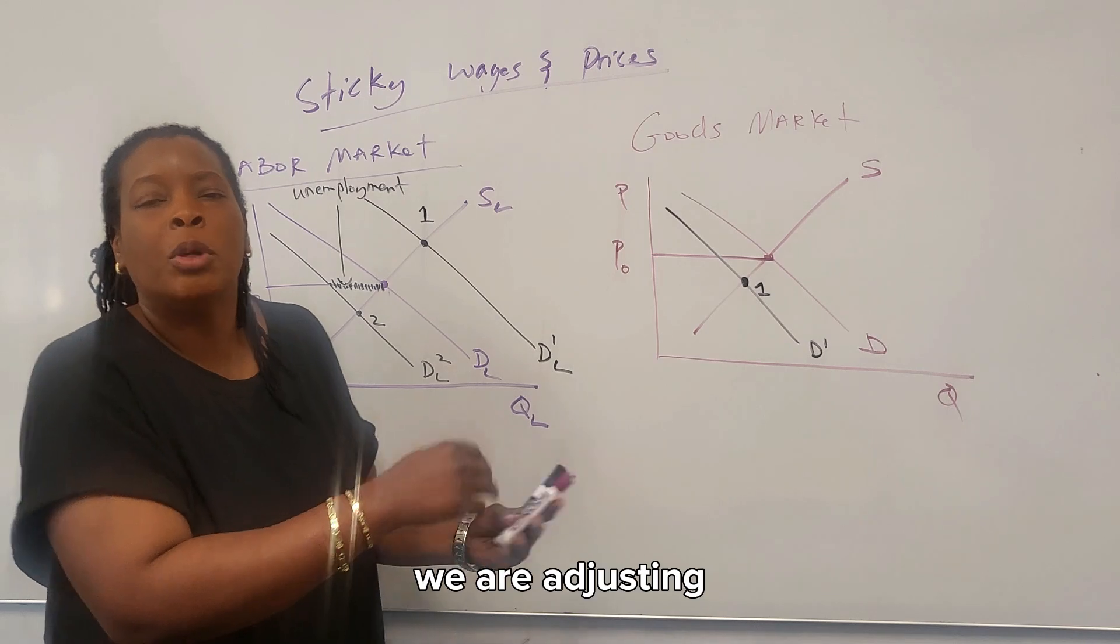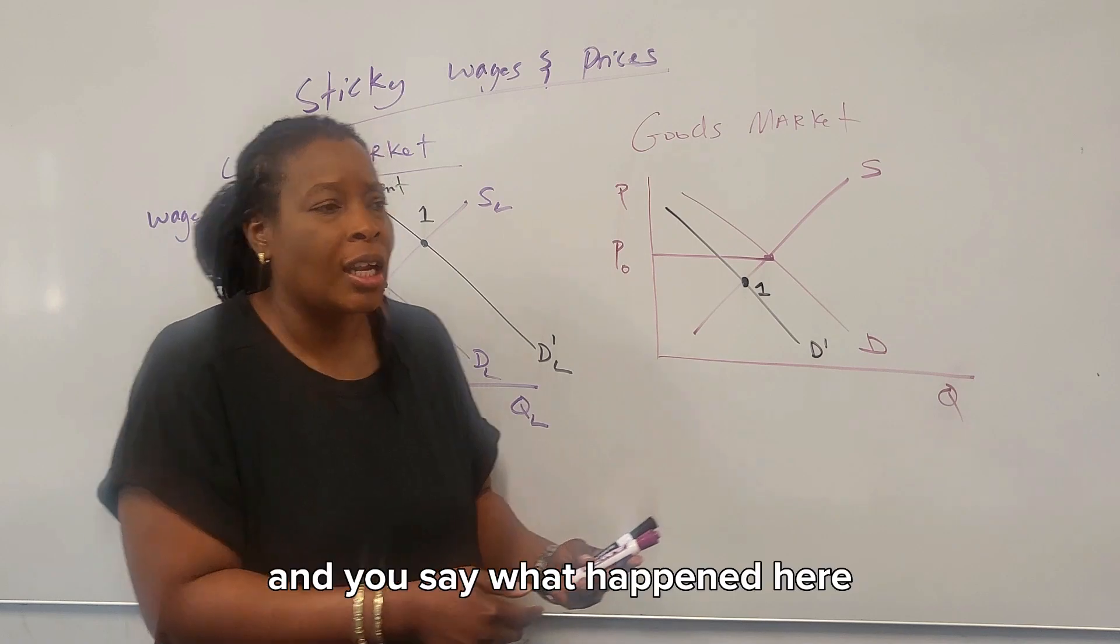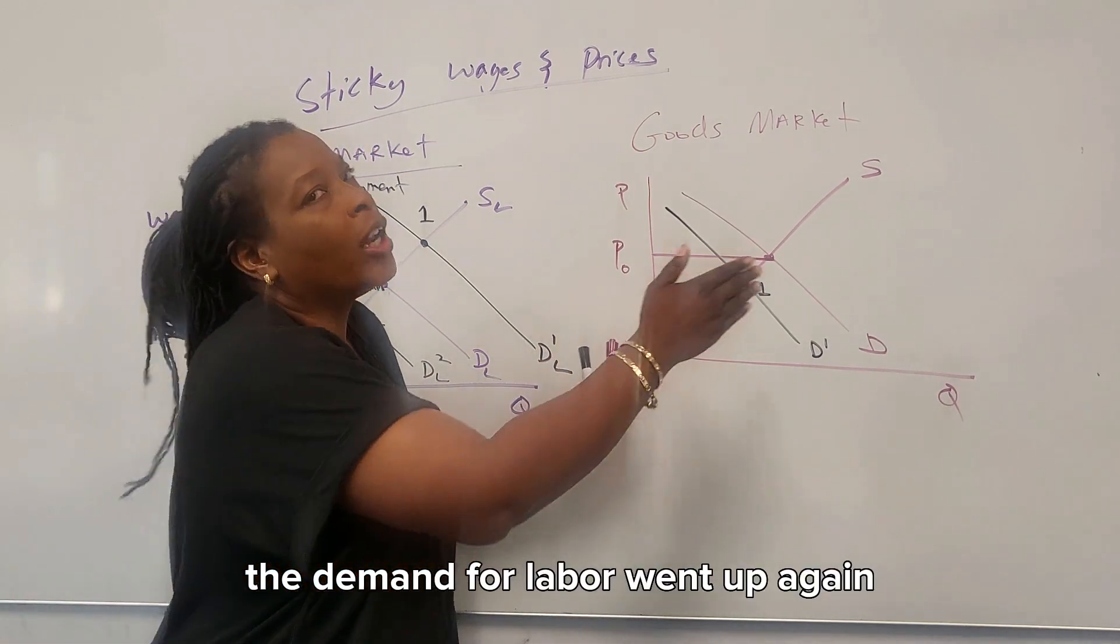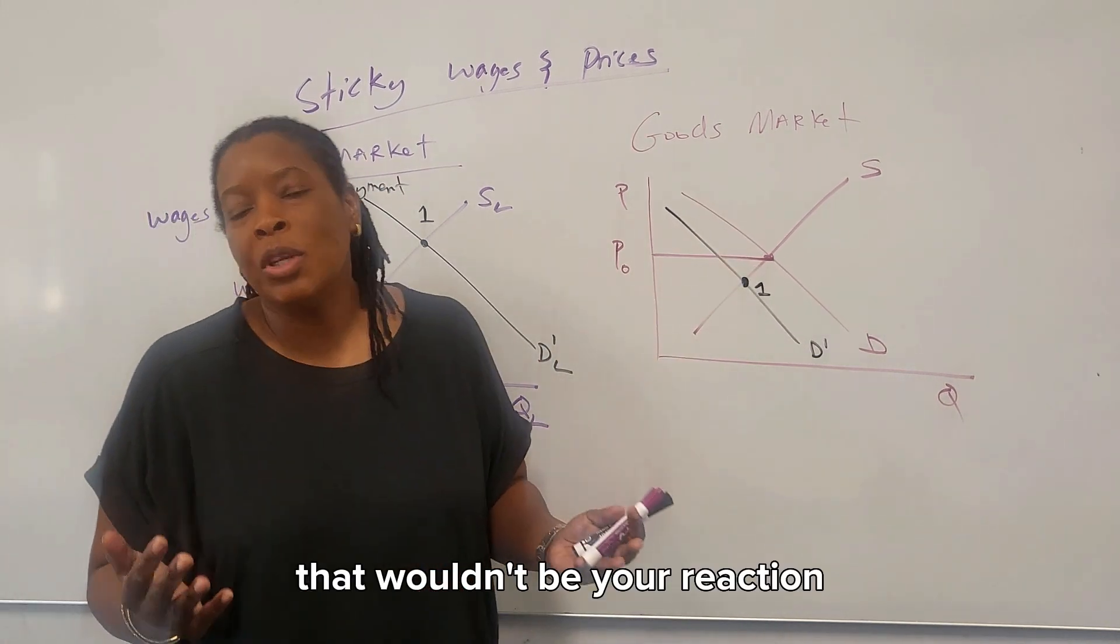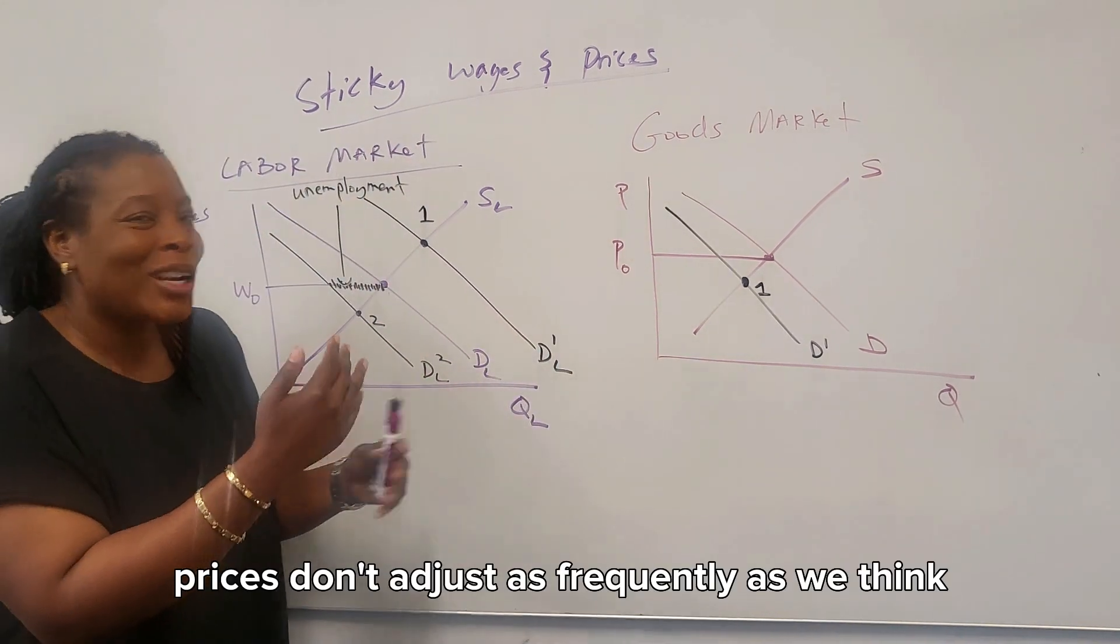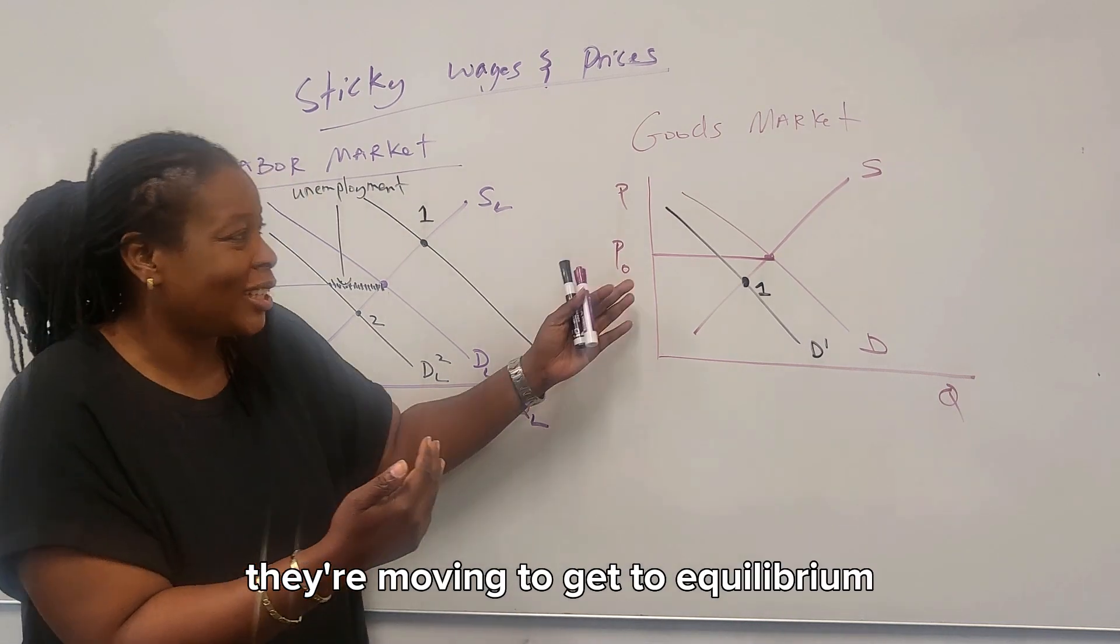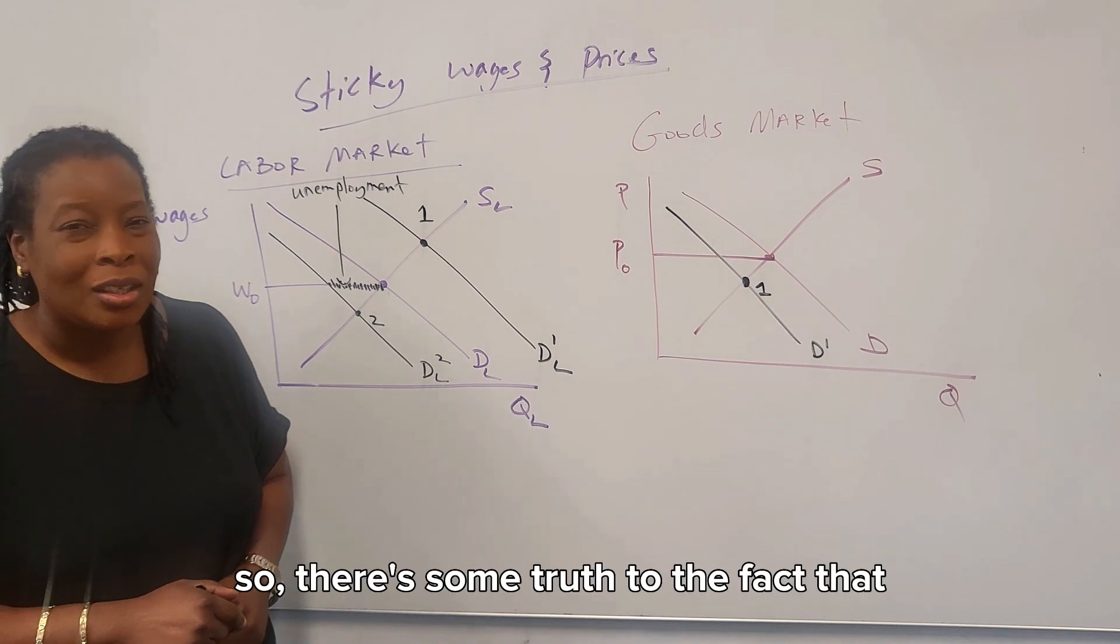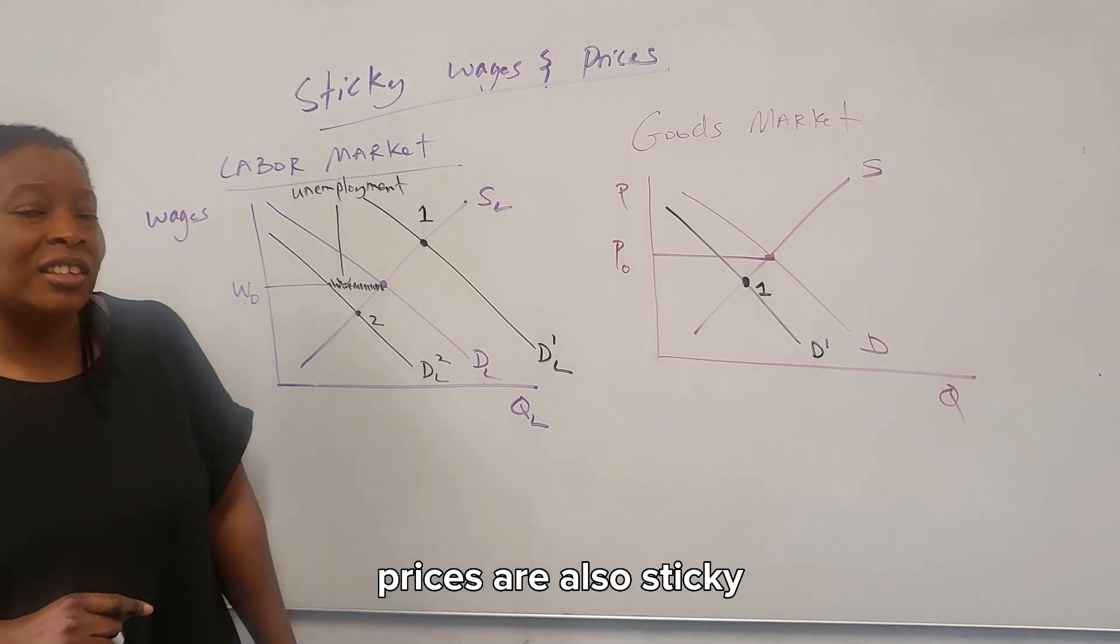And imagine you go the next day and it's now $20. And you say, what happened here? And they say, oh, the demand for labor went up again. So we changed it again. We're just moving with the economy. And you go, okay, that wouldn't be your reaction. So in the goods market, prices don't adjust as frequently as we think they're moving to get to equilibrium with these positive and negative shocks. So there's some truth to the fact that in the goods market, prices are also sticky.